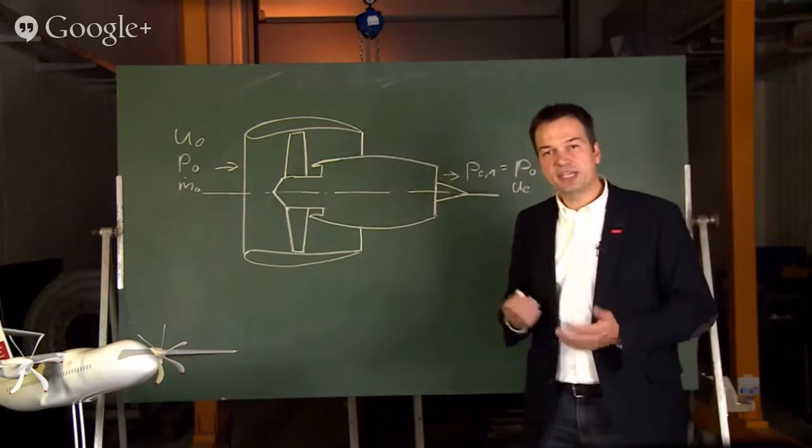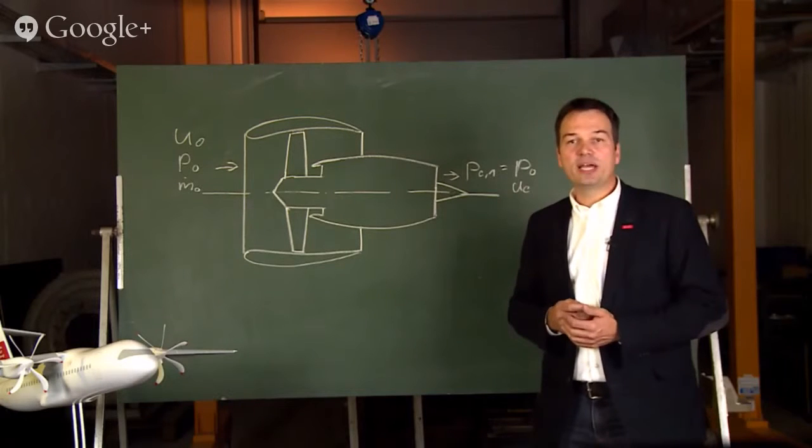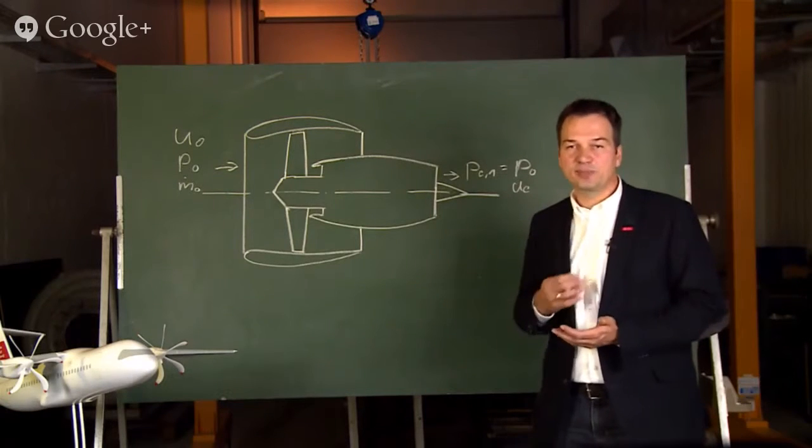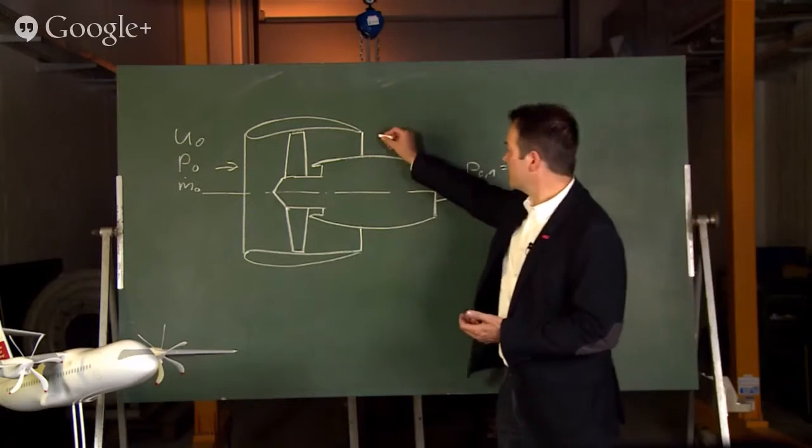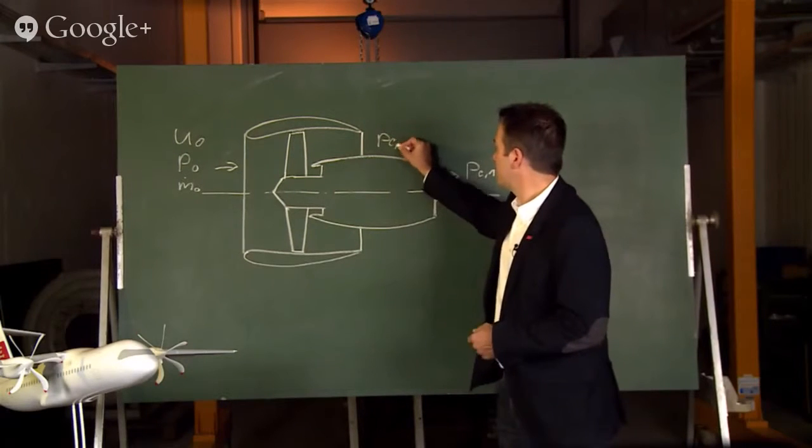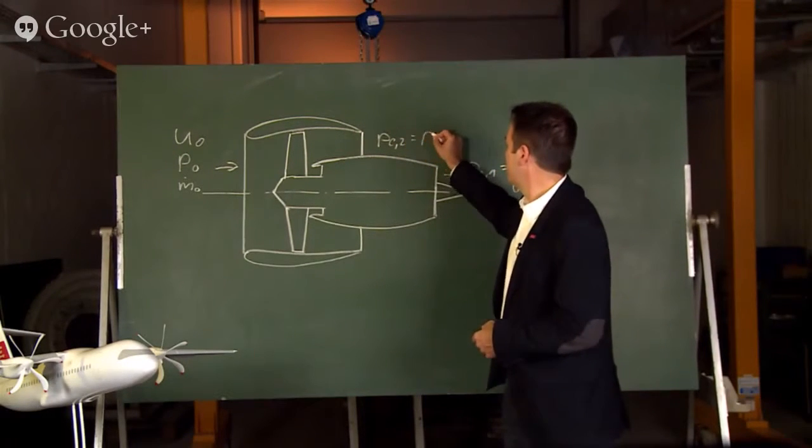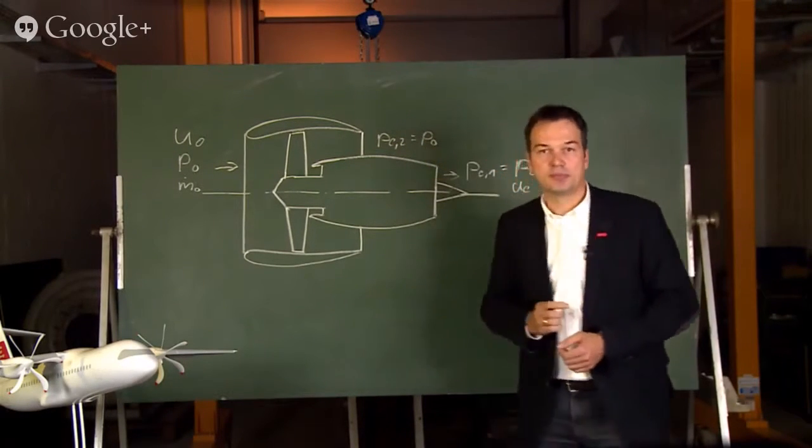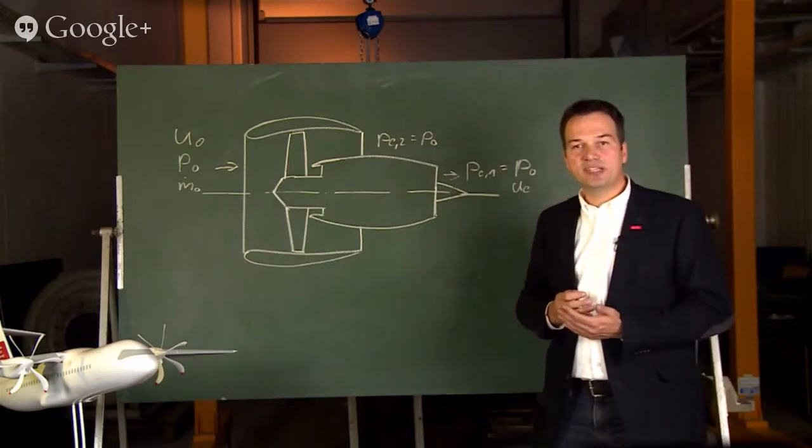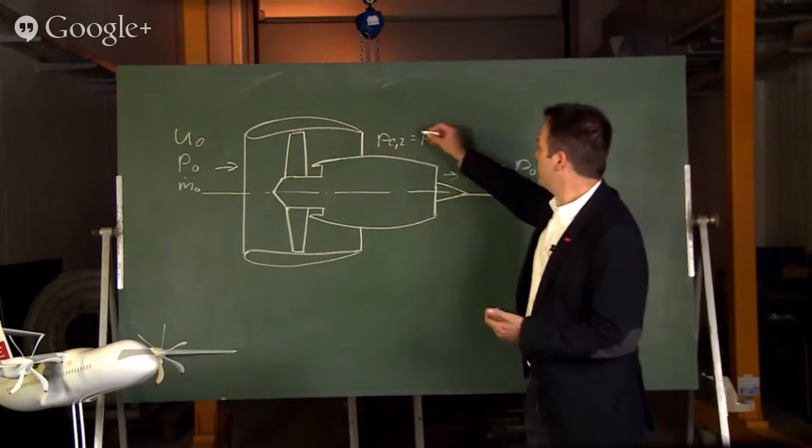For the secondary outlet or the secondary mass flow, we can assume that also a complete expansion to ambient pressure is done, and we are assuming the same exhaust speed, ue.